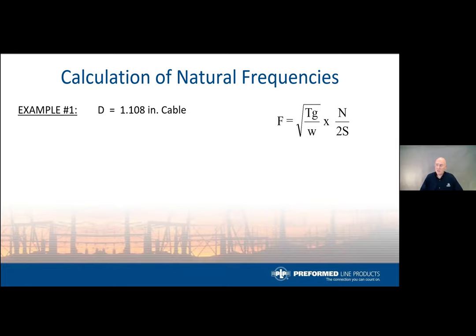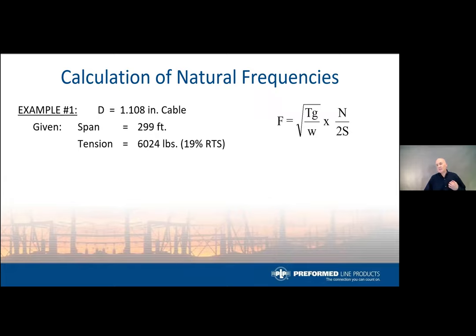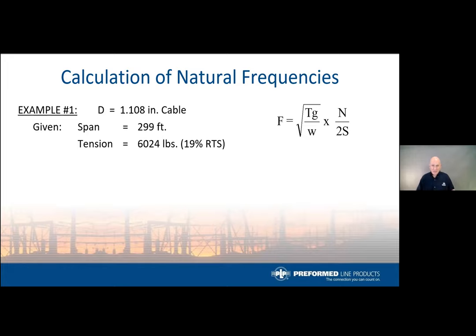For the Drake conductor example, using a span length of 299 feet and a tension of 6,024 pounds — roughly 19% of rated tensile strength — this is a high tension where we expect vibration. The weight per unit length is 1.095 pounds per foot. As tensions creep above 18% of rated tensile strength, self-damping in the conductor goes down and vibration becomes much more prevalent.